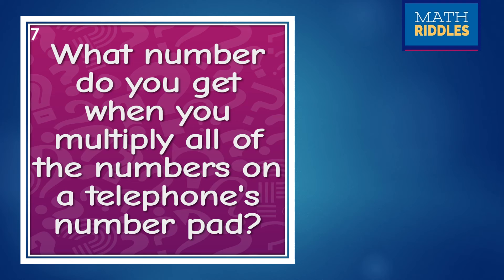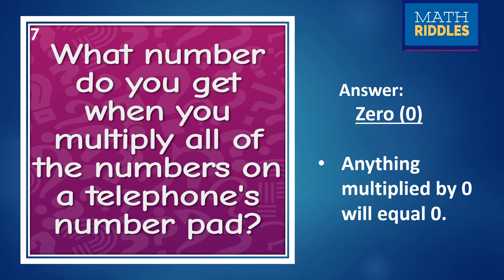The seventh question is what number do you get when you multiply all the numbers on a telephone's number pad? All the numbers, if you multiply, what do you get? What will be the final answer? The product. Hope you are multiplying all the numbers. I think no need to multiply. Just think once. What are the numbers available on the keypad? If you multiply, what will be the product? Give a pause and then you can try the answer. If you got the answer, you can check it. And the answer is there will be number 0. So 0 multiplied by any number, it equals to 0. Therefore, the product is 0.